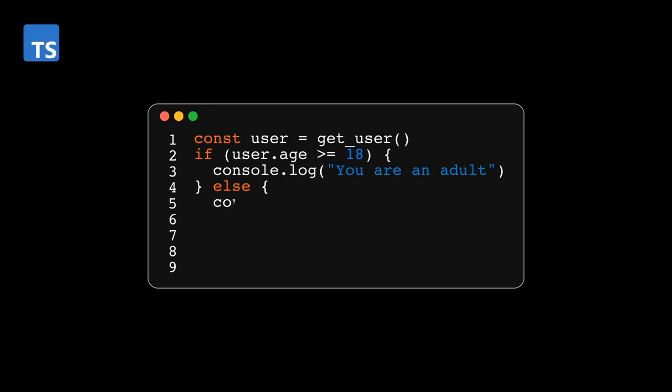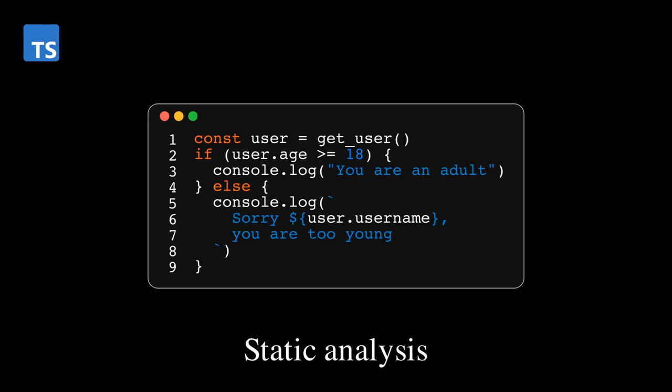On the other hand, TypeScript proceeds in two steps. Before even starting following the first instruction and jumping on the code, it will first analyze the code as a whole in a process that is called static analysis. During that step, TypeScript will make a lot of checks to find potential bugs. One of them is type checking. It will assign types to all the variables and make sure they are all used correctly. In our example, it will notice that the user's variable type doesn't contain a username field. This feature is very powerful because it allows us to catch bugs before even running the code, and so we don't need to try every possible scenario to find them.